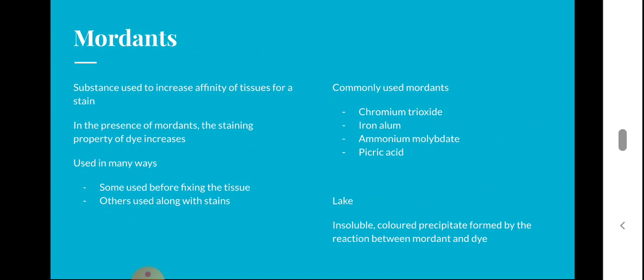Mordants are substances used along with dyes to increase the affinity of tissues for a stain or dye. In the presence of mordants, the staining property of the dye increases. Mordants are used in different ways — some are used before fixing the tissue, some are used along with the stains. Commonly used mordants include chromium trioxide, iron alum, ammonium aldate, and picric acid.